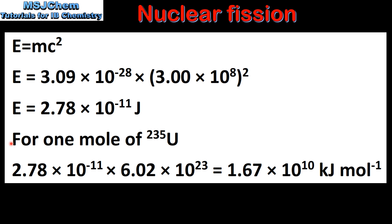For one mole of uranium-235 we multiply the value for one atom by the Avogadro constant to give us 1.67 times 10 to the 10 kilojoules per mole.